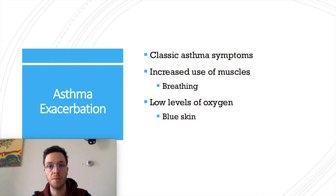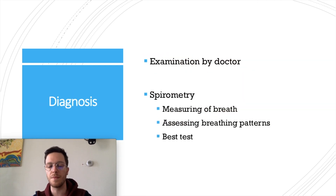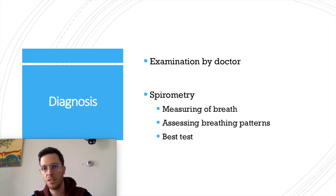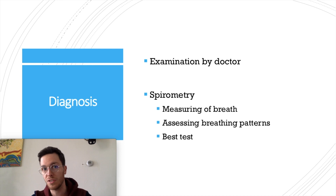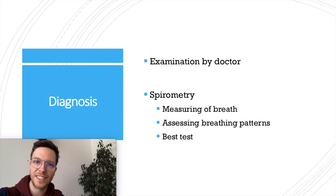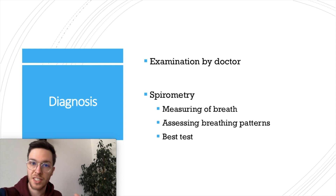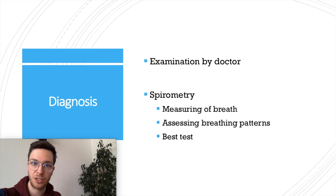How do you diagnose asthma? This is mostly done by examination: the doctor will ask you certain questions to check if you meet the right criteria, and will also listen to your lungs to hear if there are any squeaking noises. The best test to diagnose asthma is spirometry, where you breathe all the way in and all the way out through an inhalation tube.